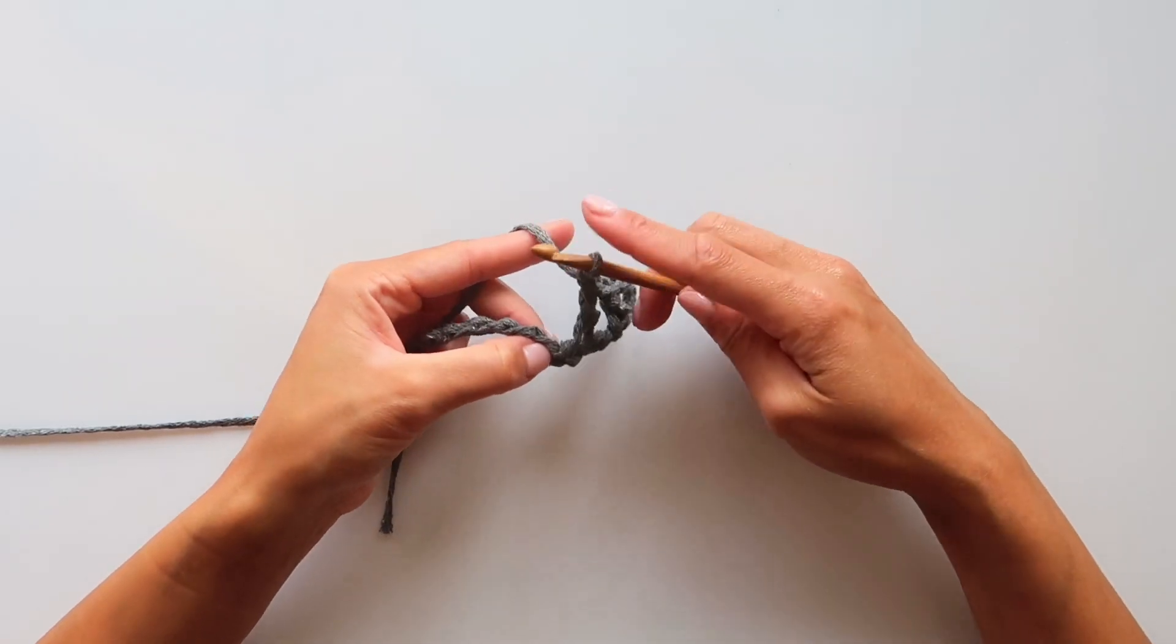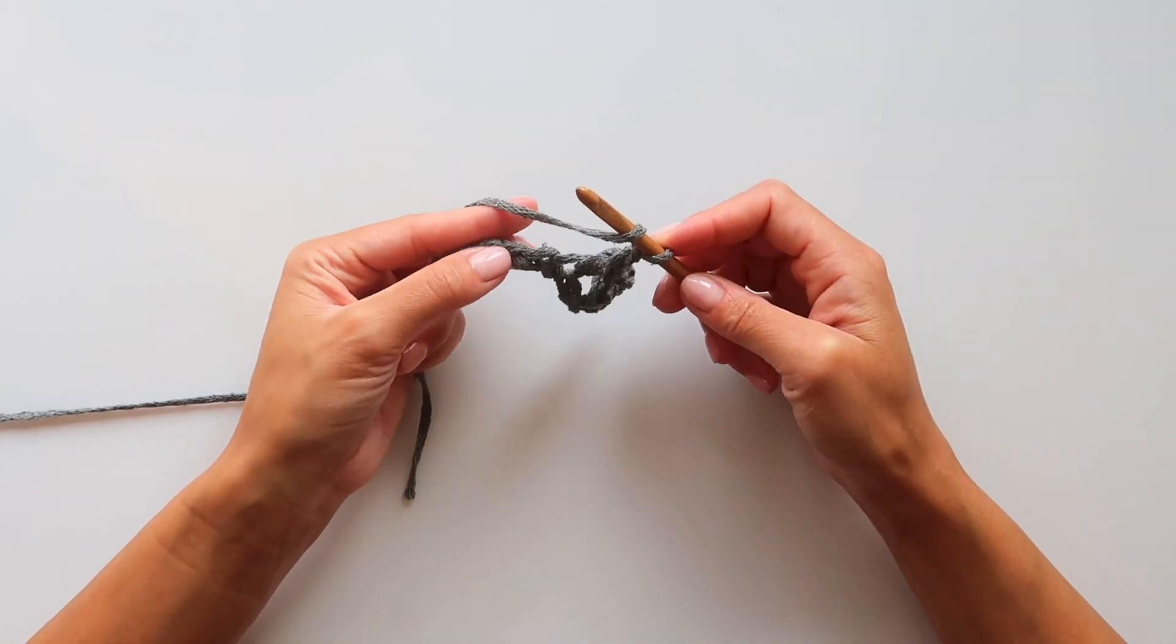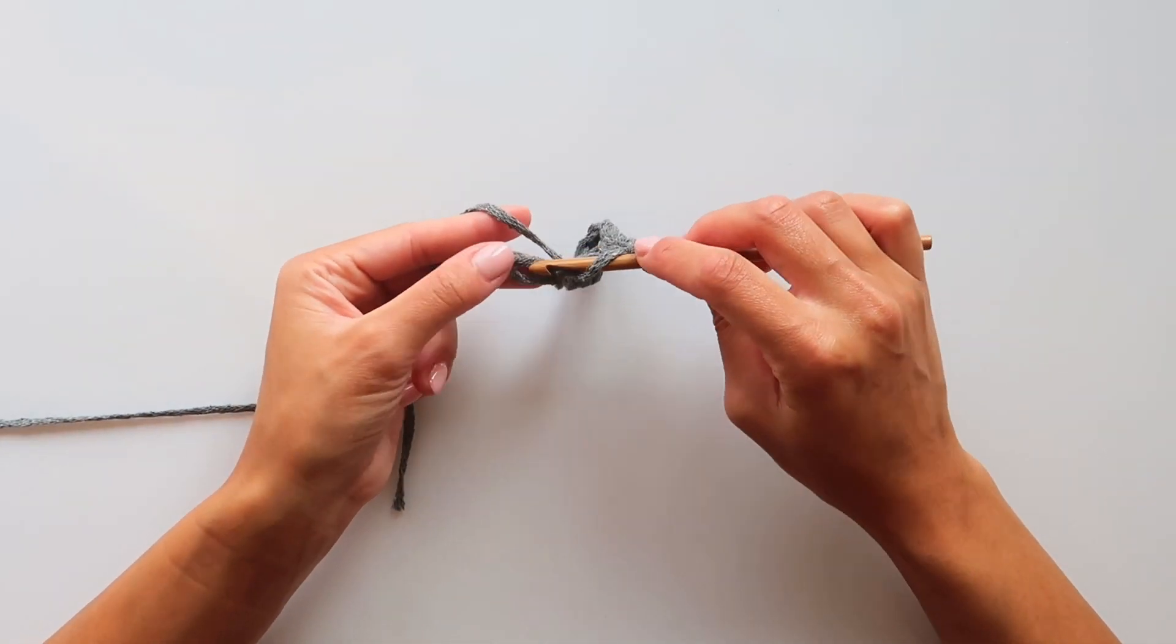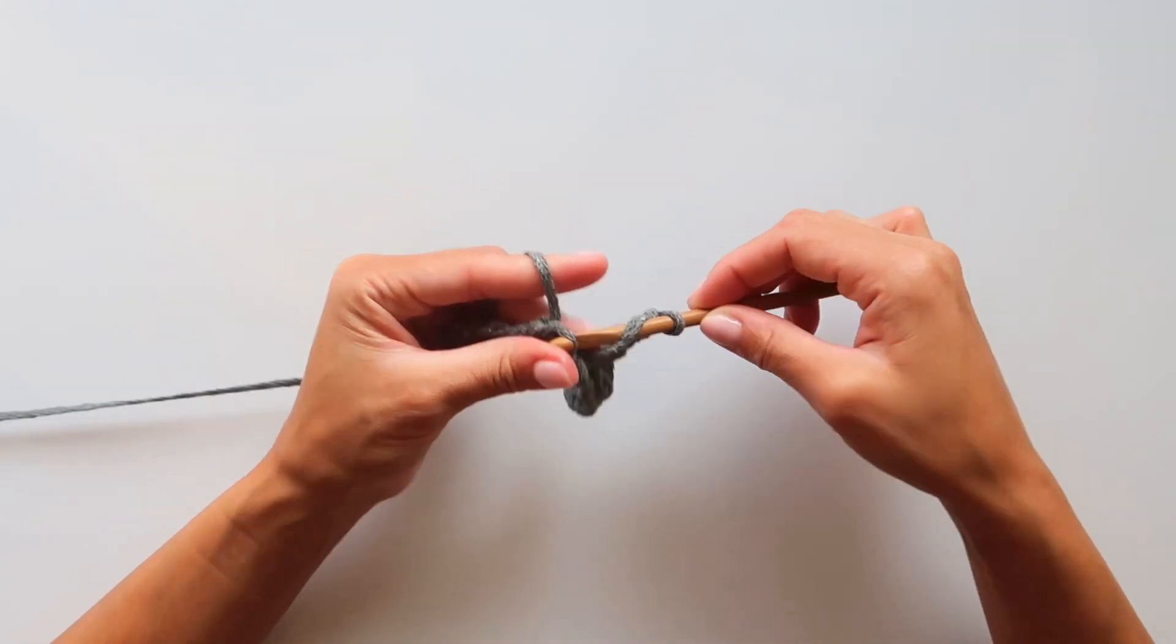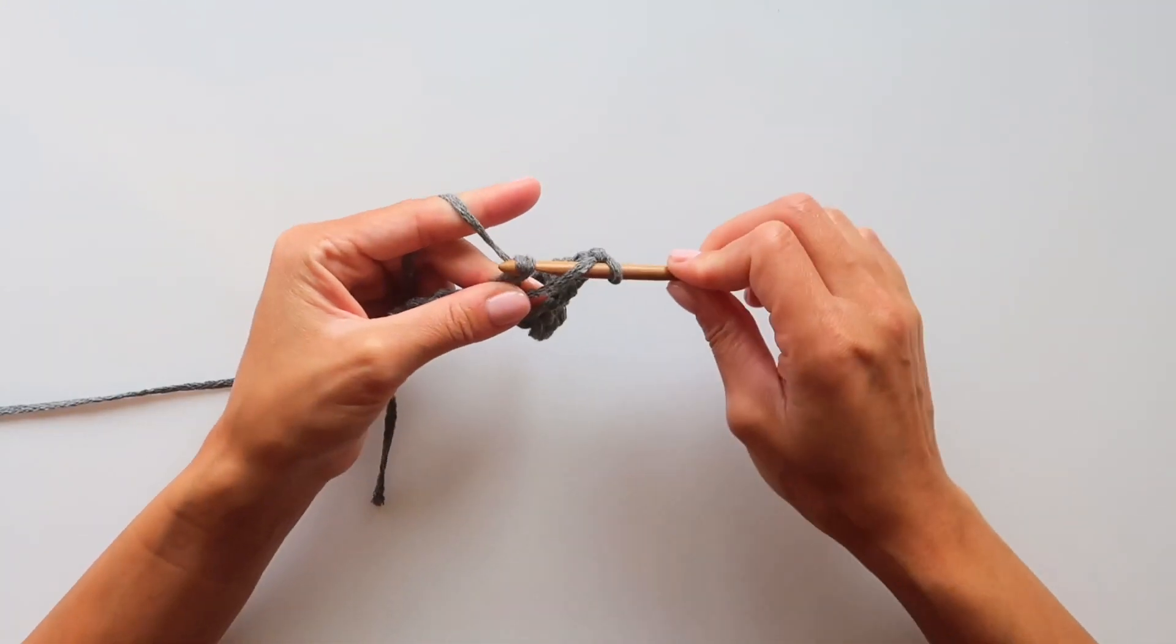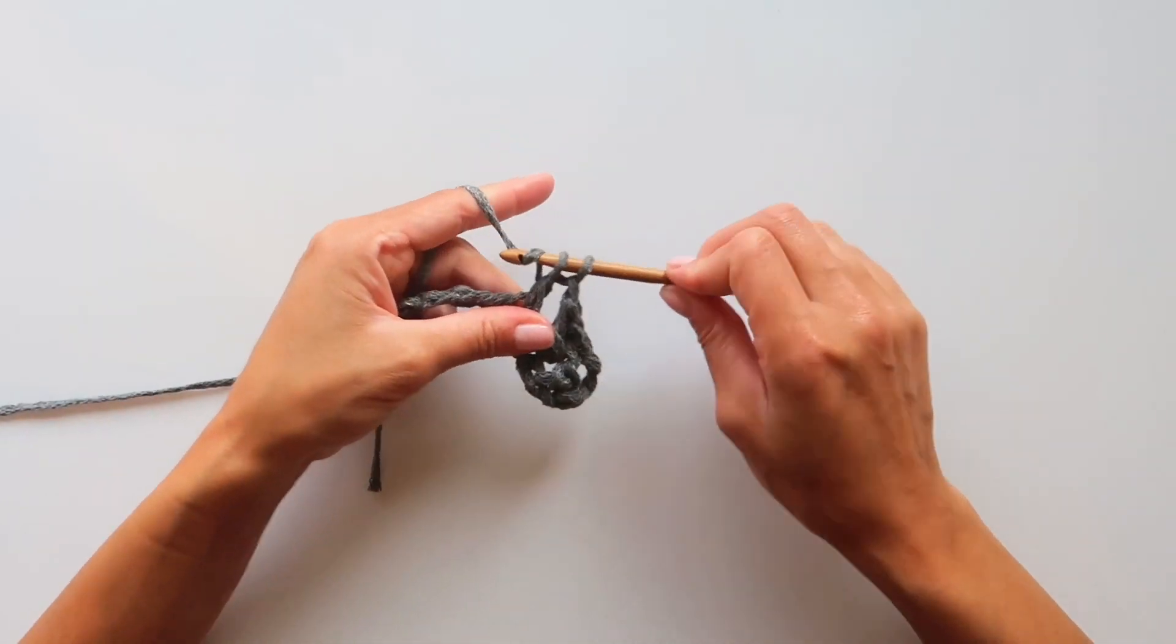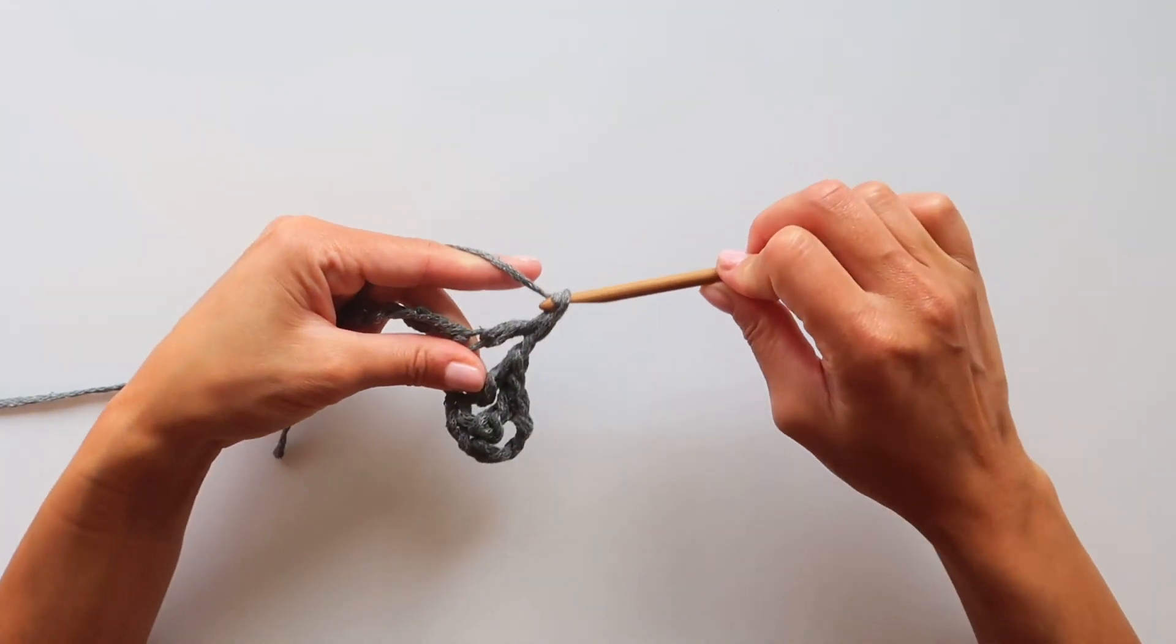For the third double crochet, skip and go to the next one, then do the next double crochet and chain one.